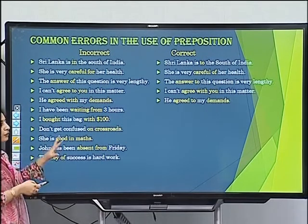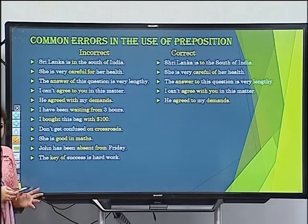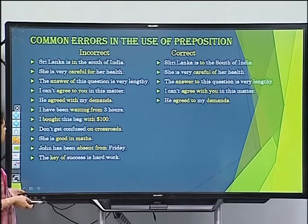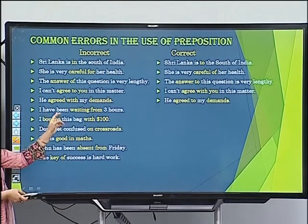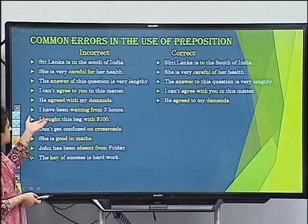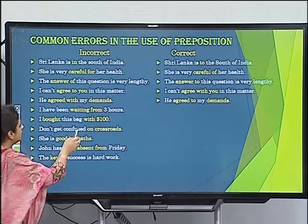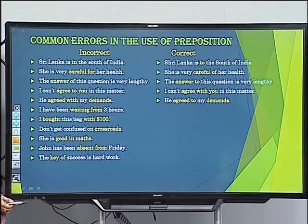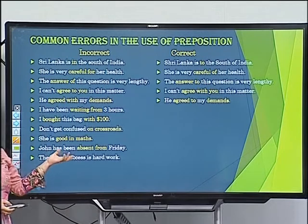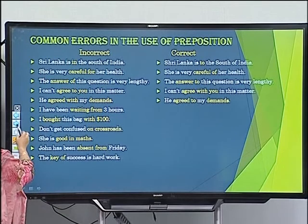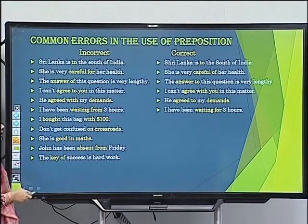Error: 'I have been waiting from 3 hours.' Since 'have been' indicates perfect continuous tense, and 3 hours is a period of time (not a point of time), we use 'for,' not 'since.' Correct: 'I have been waiting for 3 hours.'